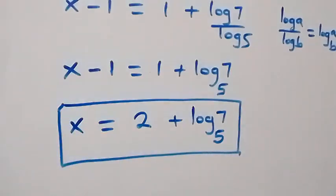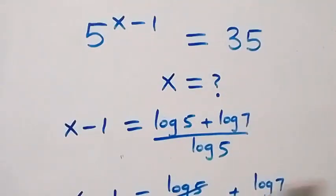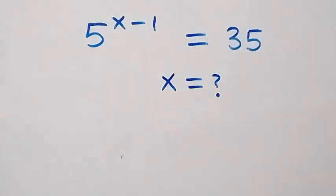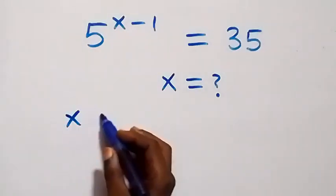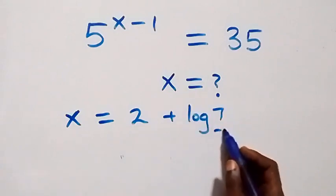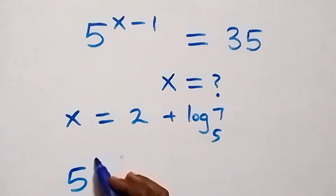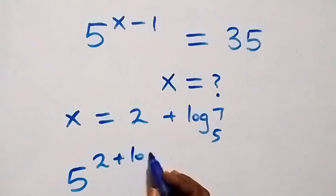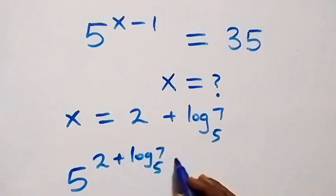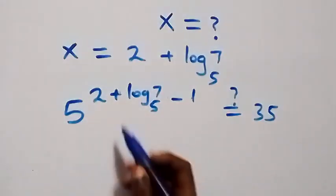So x equals 2 plus log 7 to base 5. Let's verify this satisfies the original problem. Substituting x equals 2 plus log 7 to base 5, we get 5 raised to power 2 plus log 7 to base 5.